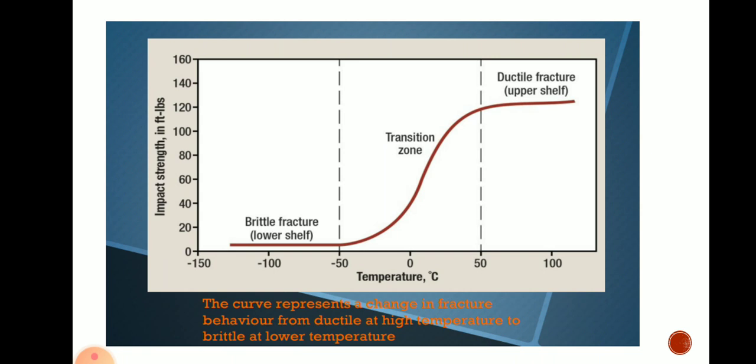Under low temperatures, there is a chance of impact loading causing a ductile material to break like a brittle material. This curve represents a change in fracture behavior from ductile at high temperature to brittle at low temperature. The transition zone shown in the diagram is from minus 50 degrees Celsius to 50 degrees Celsius, illustrating the importance of testing under impact loading at different temperature conditions.